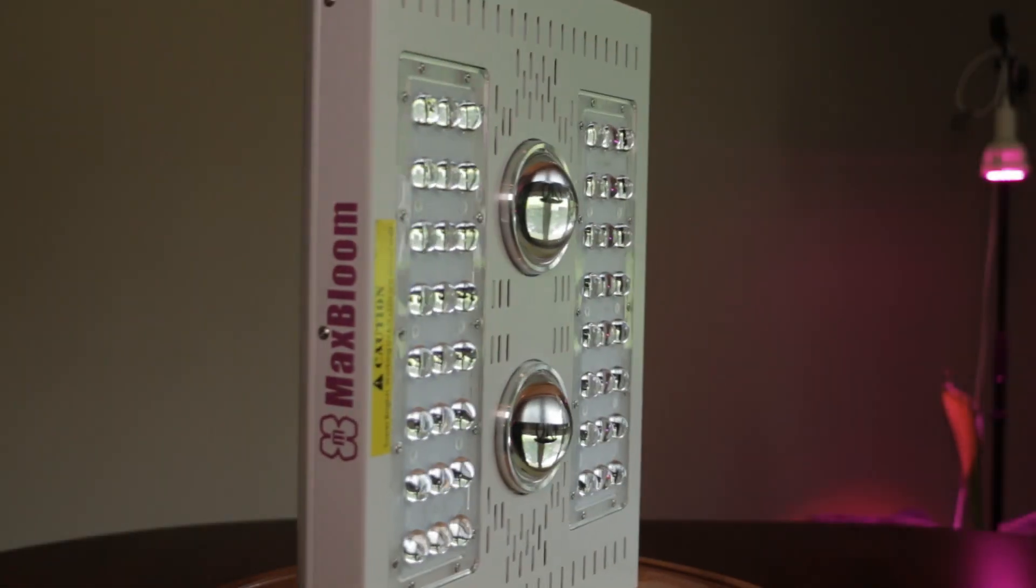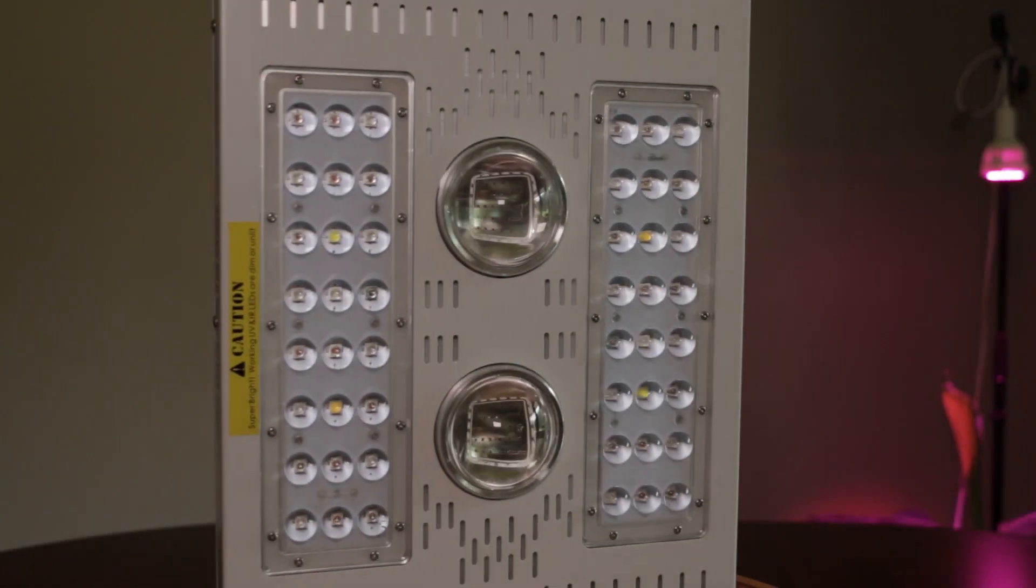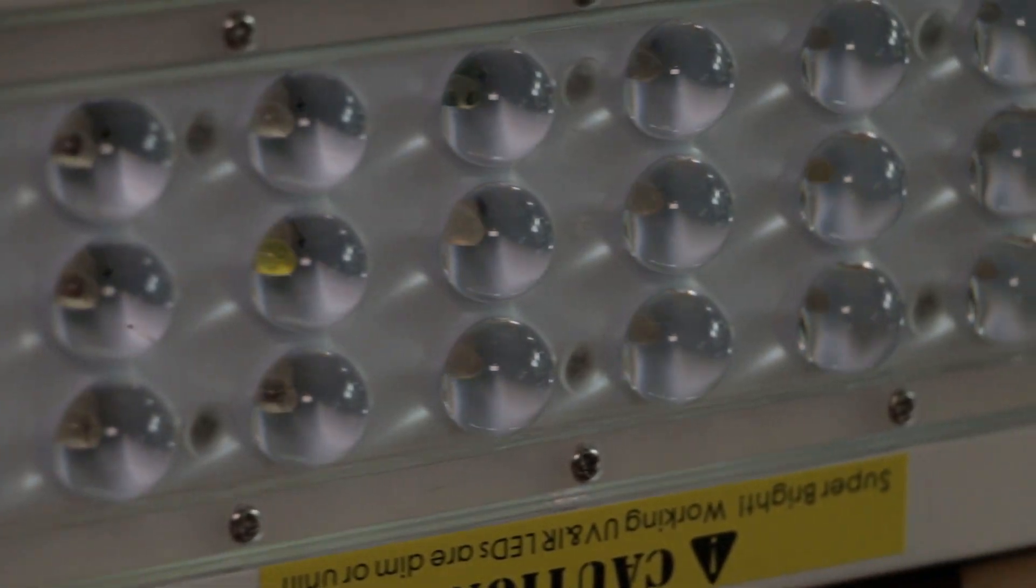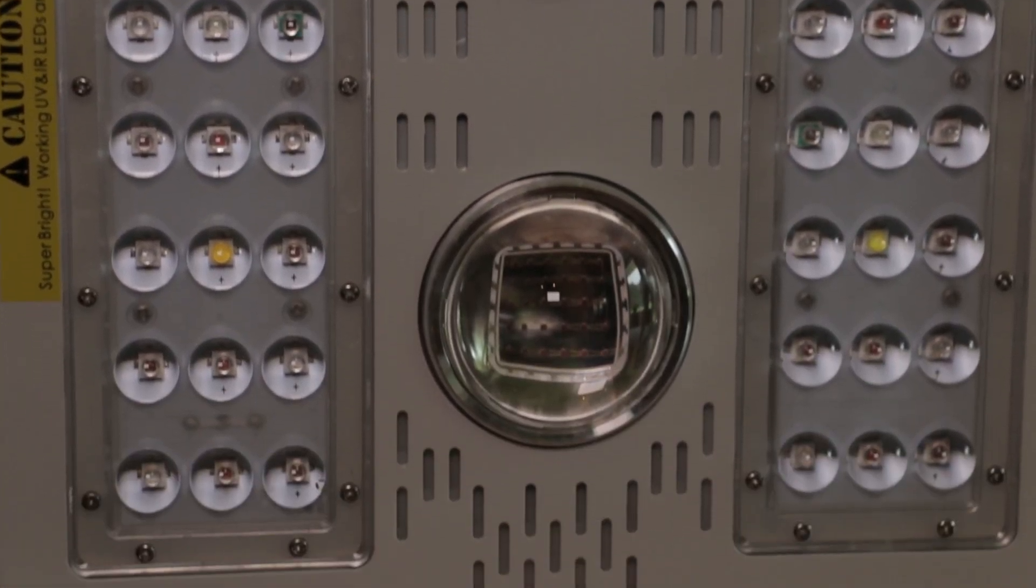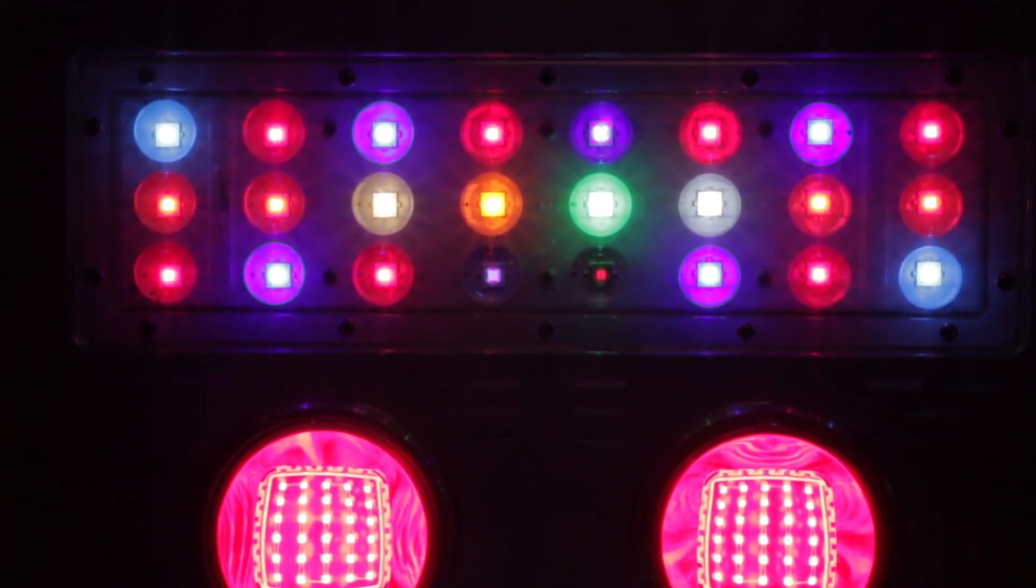Today we are taking a quick look at this new LED grow light by Max Bloom. This light features a 12 band spectrum ranging from UV to infrared, which when turned on basically appears to have all the colors of a rainbow, even green.